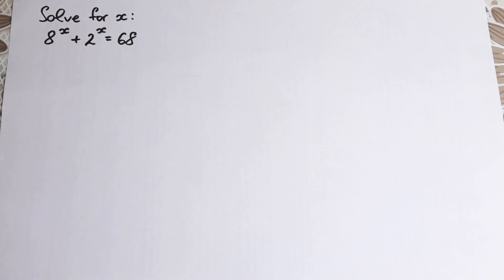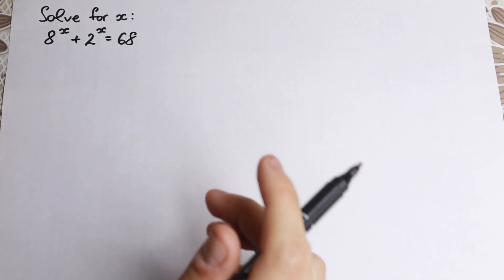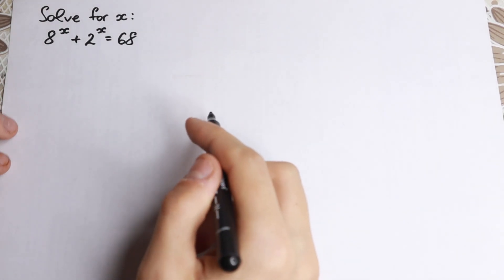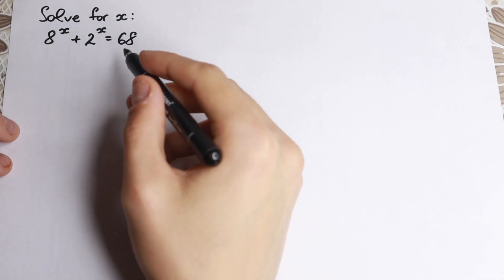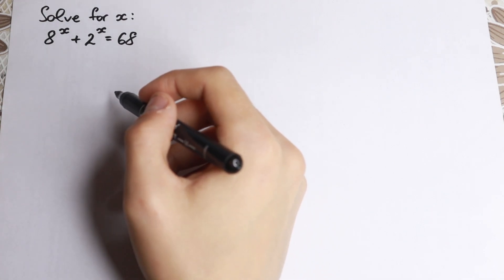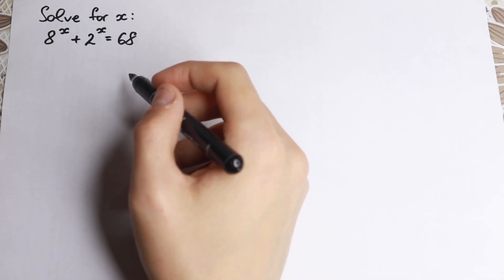Hello everyone! Happy to see you here and really interesting algebra problem today. We have 8 to the x plus 2 to the x equal to 68 and we need to find our x.